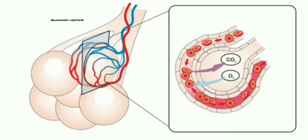This topic covers gaseous exchange between alveolus and capillaries. During breathing, air enters into the lungs and into small air sac structures called alveoli. There are millions and millions of alveoli present in the lungs, and each alveolus is surrounded by a blood capillary.